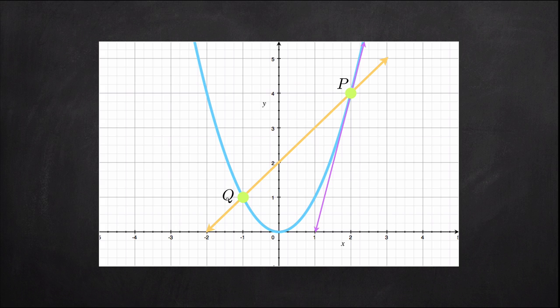We'll keep P locked in place at that exact spot, but we'll say that Q is movable. If we move Q along the graph closer and closer to P, which means that the distance between P and Q is getting smaller and smaller, the slope of the secant line is getting closer and closer to the slope of the tangent line.